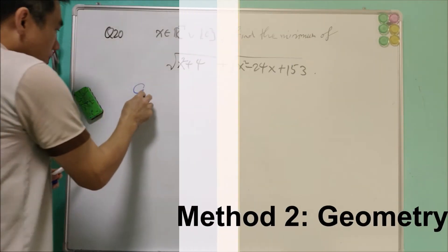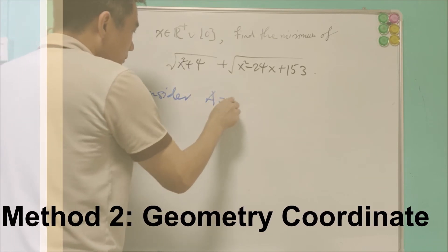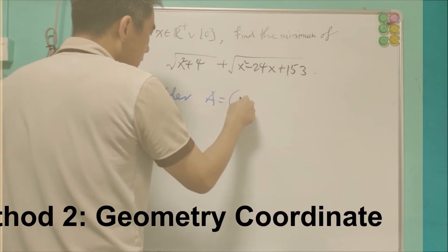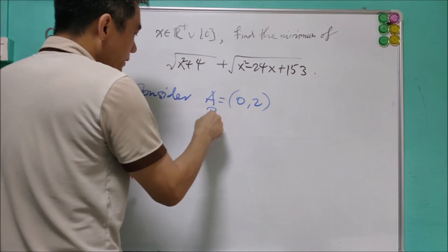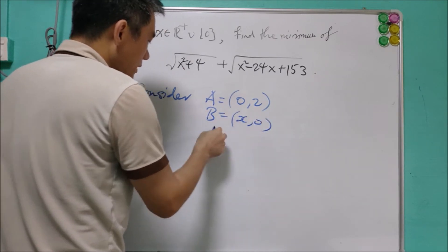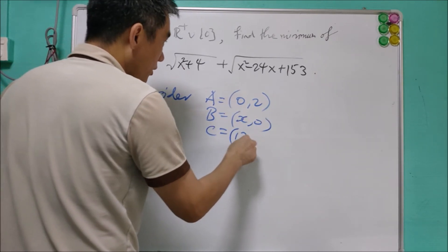So next, we consider A to be equal to (0, 2), B to be equal to (x, 0), and C to be equal to (12, -3).